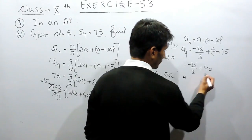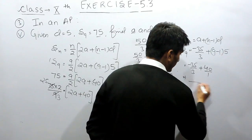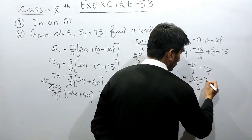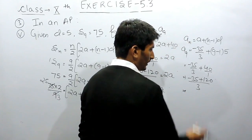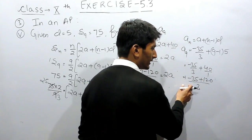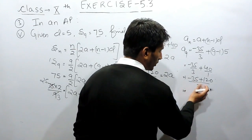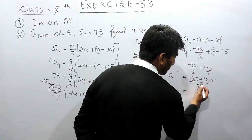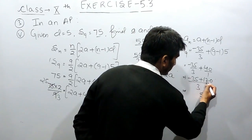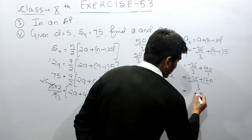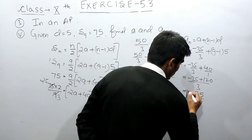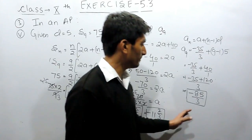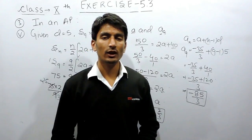To solve this fraction, we take the LCM. The 40 becomes 120 upon 3, so we get (minus 35 plus 120) upon 3. But since plus and minus gives minus, we compute 120 minus 35 equals 85, giving us minus 85 upon 3. So the ninth term of this AP is equal to minus 85 upon 3.